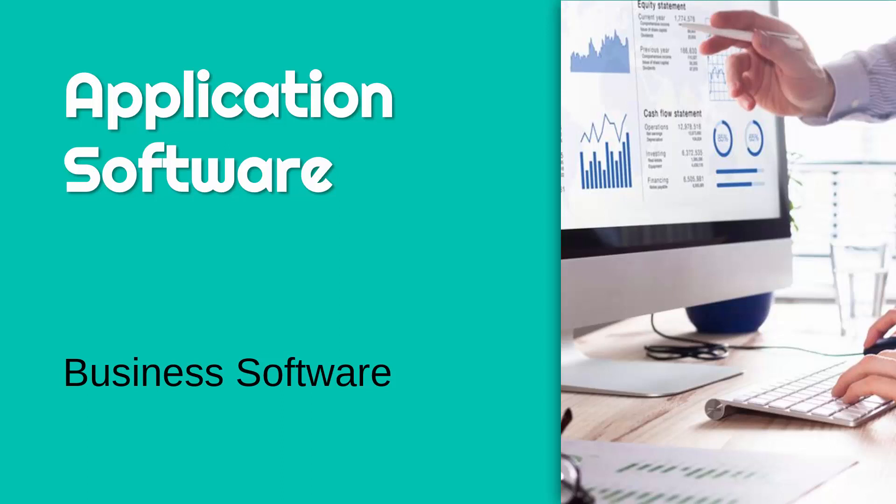Having looked at productivity software and development tools, now to look at some even more specific examples of business software. Business software is aimed at a particular area of business. Productivity software is usually quite generic and could be used by any area or any business, but this category is usually for more specific purposes.